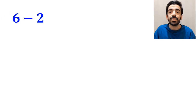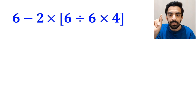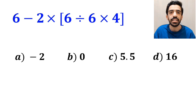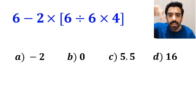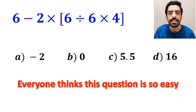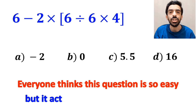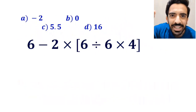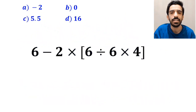What is the value of the expression 6 minus 2 times open bracket 6 divided by 6 times 4 close bracket? Which option do you think is the correct answer to this question? Everyone thinks this question is so easy, but it actually tricks a lot of people. Let's break it down and solve it together.